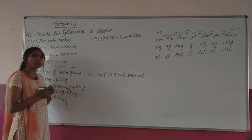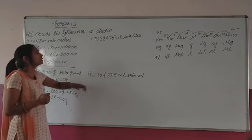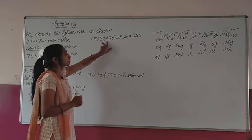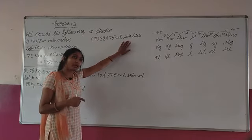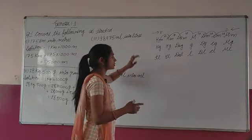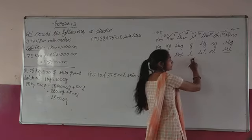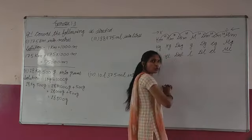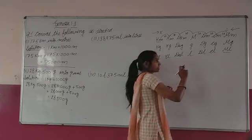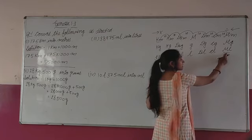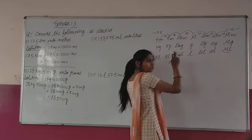Now third part of this question. 38,975 milliliter into liter. Ab kya karna hai? Milliliter se liter mein change karna hai. Milliliter is here, liter is here. Kaise chalna hai? Opposite direction mein — right to left. It means kya hogi? Division. Kitne steps? 1, 2, 3 — 3 steps.